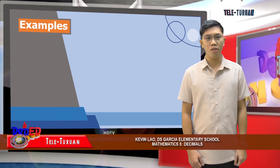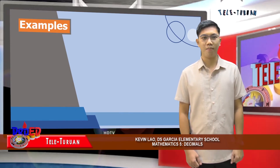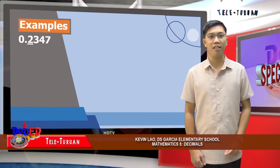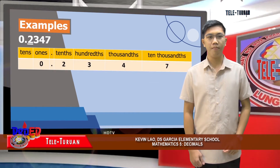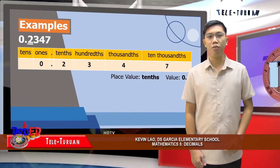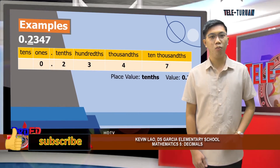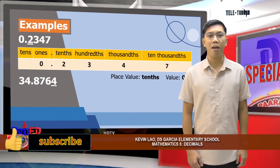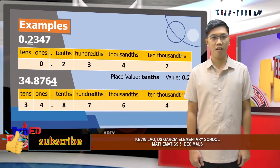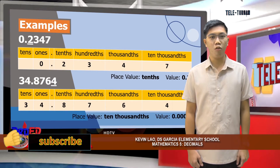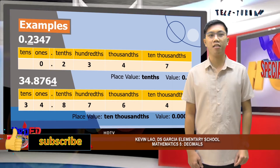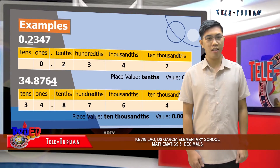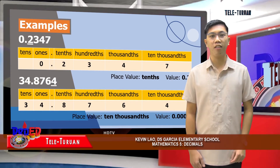Let's take a closer look at these examples. In two thousand three hundred forty-seven ten-thousandths, the underlined digit is two. Its place value is tenths, while its value is two tenths. In the second example, the underlined digit is four. The place value of four in thirty-four and eight thousand seven hundred sixty-four ten-thousandths is ten-thousandths, while its value is four ten-thousandths.